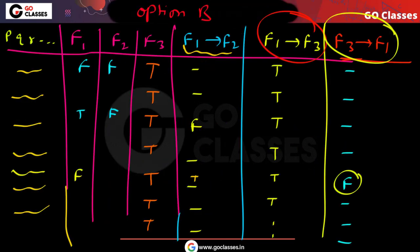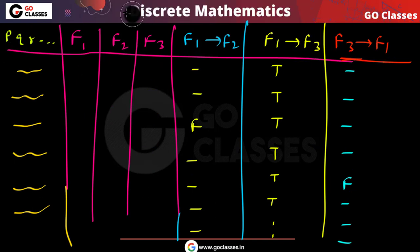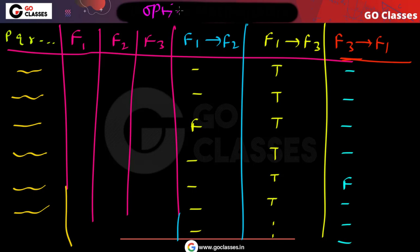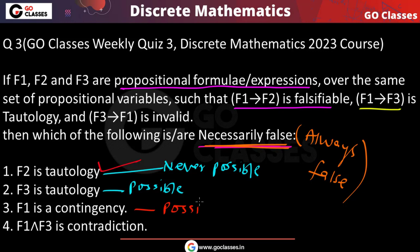Option C says F1 is a contingency, meaning somewhere it is true and somewhere it is false. We need F1 implies F3 as tautology and F1 implies F2 as falsifiable. We can construct rows where F1 is true and F2 is false (making F1 implies F2 false), and other rows where F1 is false — satisfying all conditions. So option C is also possible.